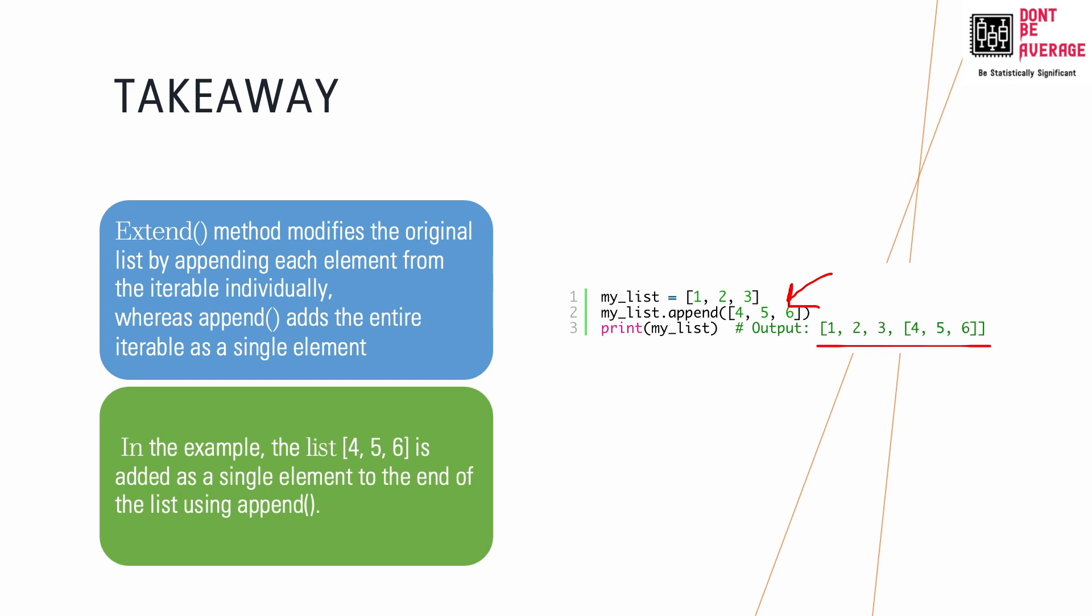If you want to add a single element, use append. If you want to add a list or tuple of elements, use extend. In this example, the list [4, 5, 6] is added as a single element since we used append. If we had used extend, we would get a flat list instead of a nested list.